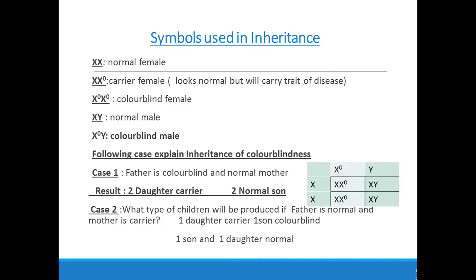Now two cases. Case 1: father is color-blind and mother is normal. When we make a cross, placing the mother on the left and color-blind father on the right, the four subsquare results are XX⁰, XX⁰, XY, and XY — meaning two carrier daughters and two normal sons will be formed. Case 2: father is normal and mother is carrier. The results will be one carrier daughter, one normal daughter, one color-blind son, and one normal son, as seen when you draw the Punnett square.